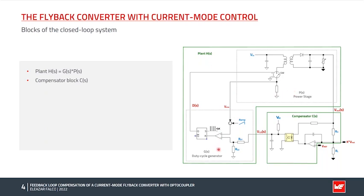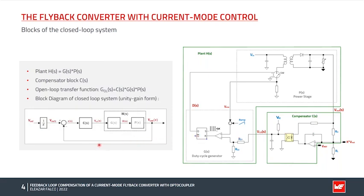The duty cycle generator receives as its input the compensator voltage Vco as well as the voltage across the sense resistor, which is simply an image of the transformer magnetizing current. It then outputs the duty cycle, which is the input to the power stage, with the converter output voltage being the output. The compensator with transfer function C(s) receives the converter output voltage and outputs a voltage to the peak current mode duty cycle generator. The open-loop transfer function is simply the product of the compensator and the plant transfer functions.